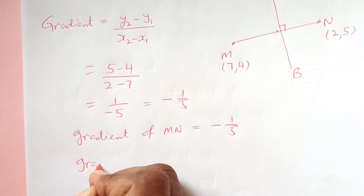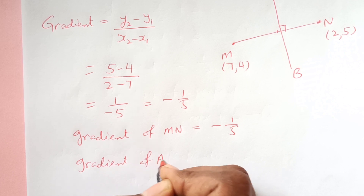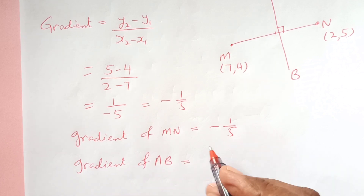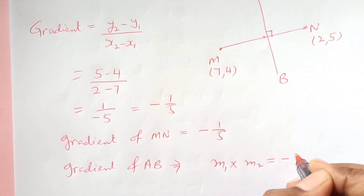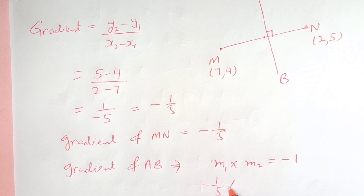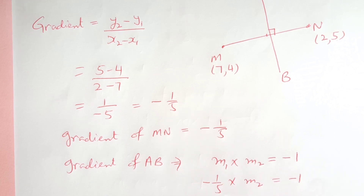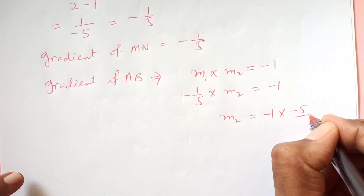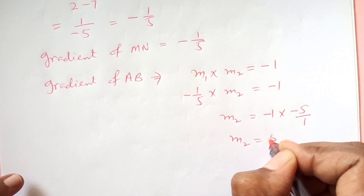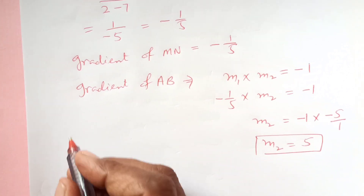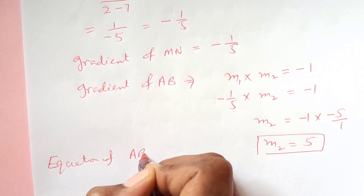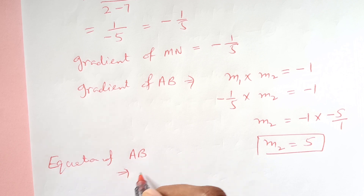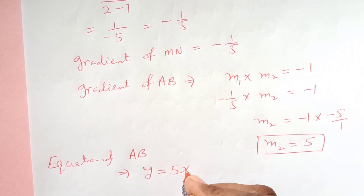Now we find the gradient of AB. Since AB is perpendicular to MN, we use m1 × m2 = -1. So (-1/5) × m2 = -1, giving m2 = -1 × (-5/1) = 5. So m2 is 5. The equation of AB is y = 5x + c.